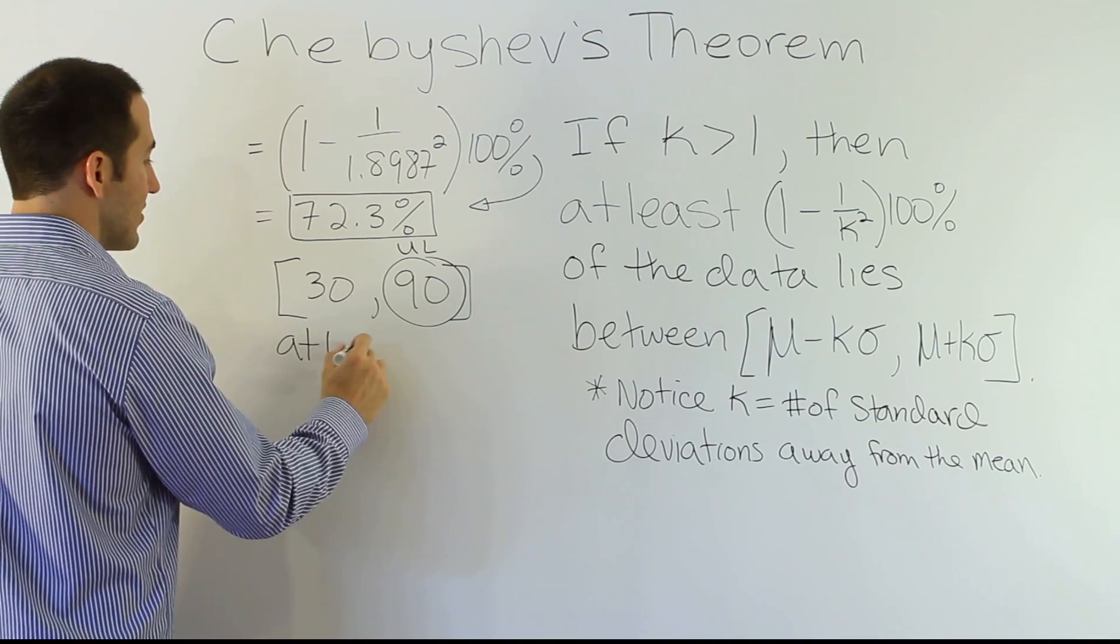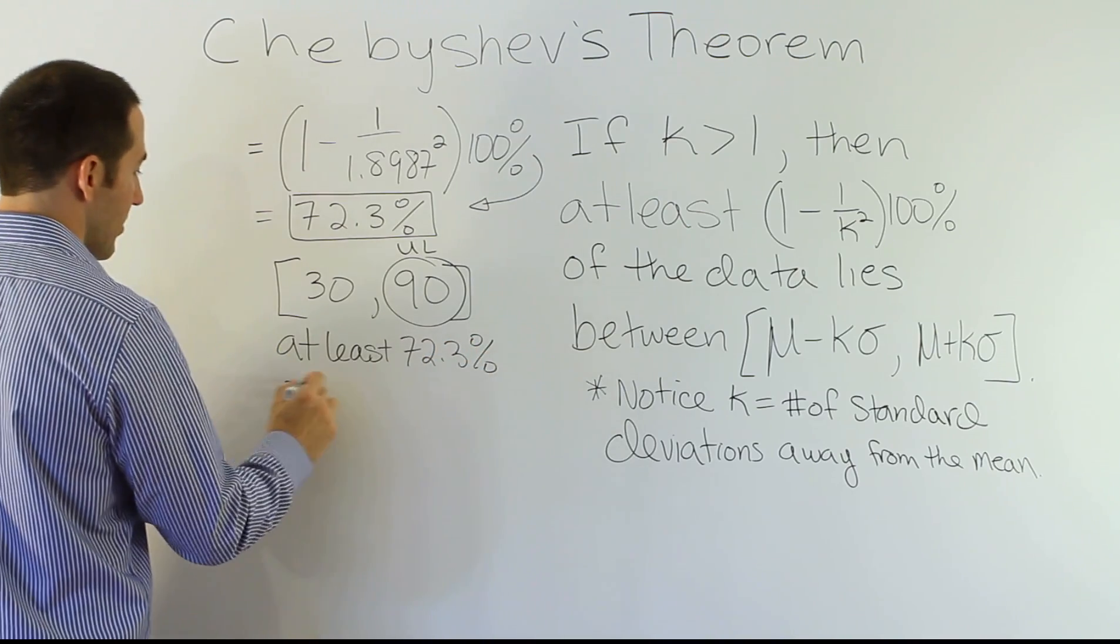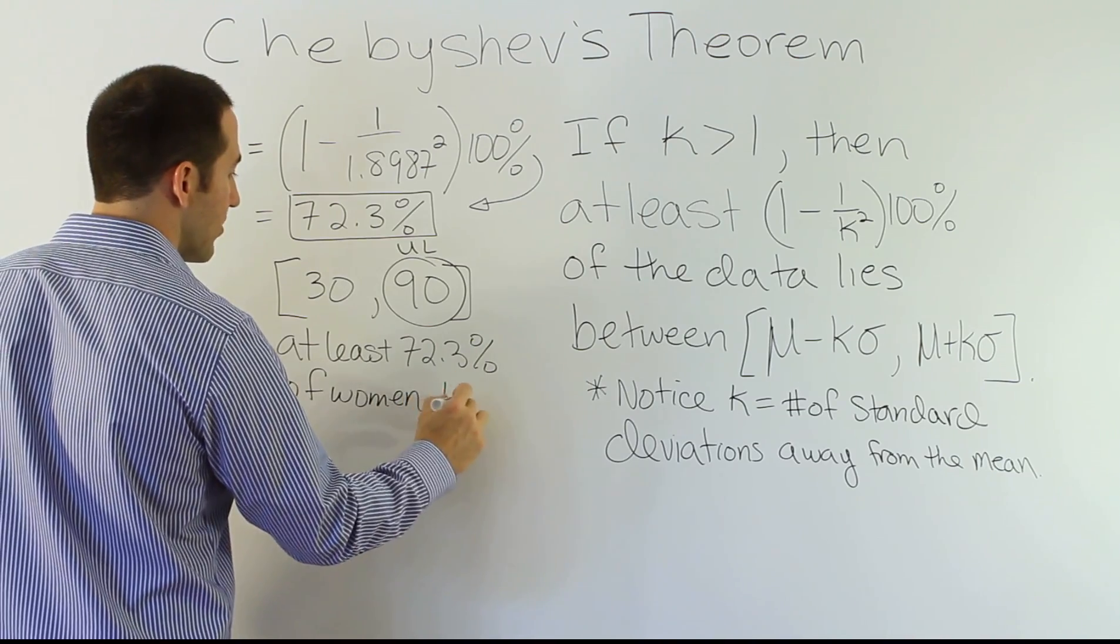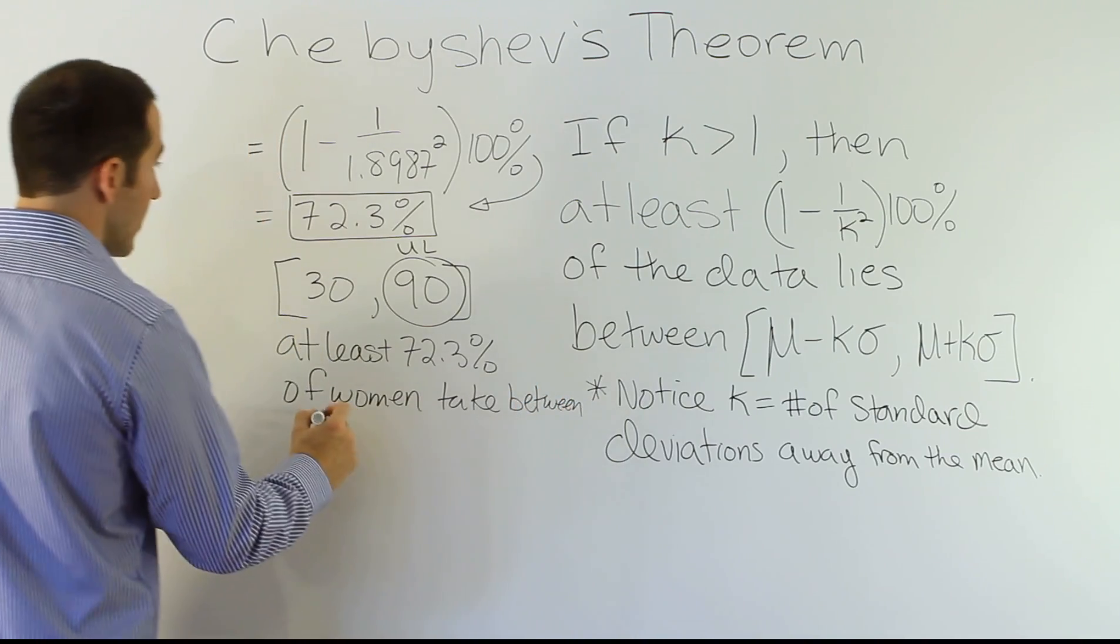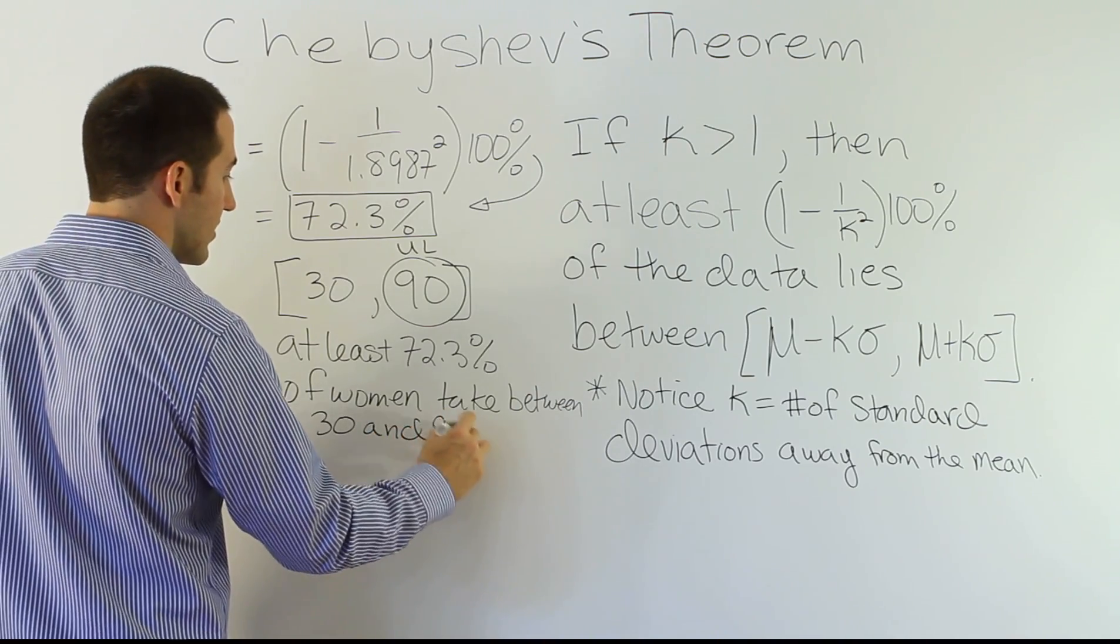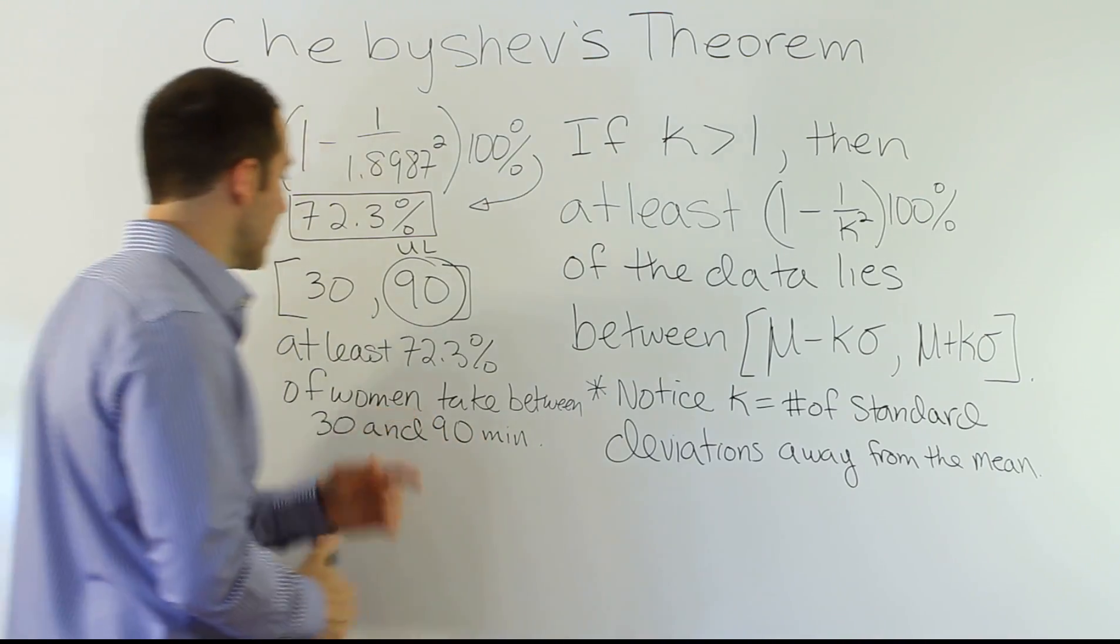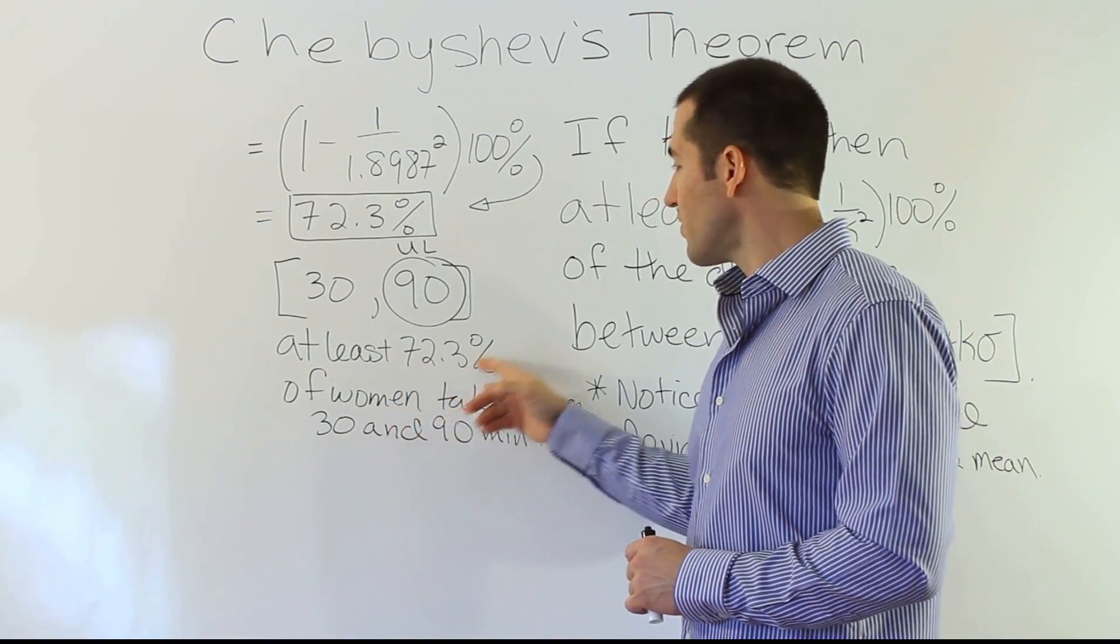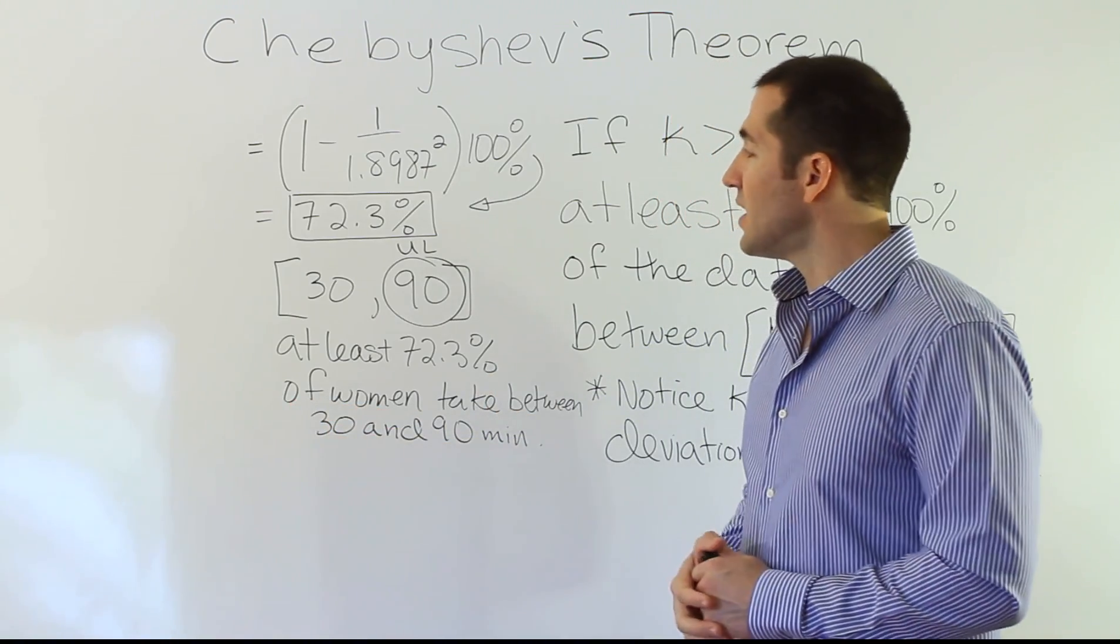72.3%. And so, what is this saying? What it's saying, ultimately, is that at least 72.3% of women are going to take this long, between this long and this long, to get ready for work. So, at least 72.3% of women take between 30 and 90 minutes to get ready for work. So, that's what our interval is conveying here. That at least 72.3% of all the women take between 30 and 90 minutes getting ready for work.